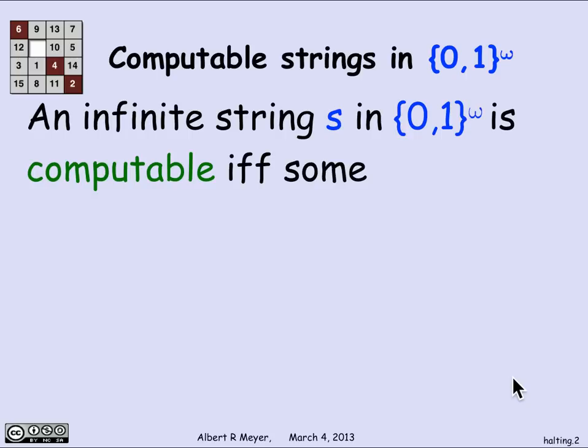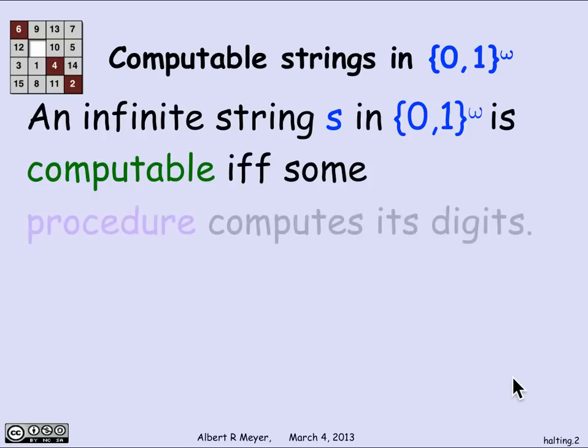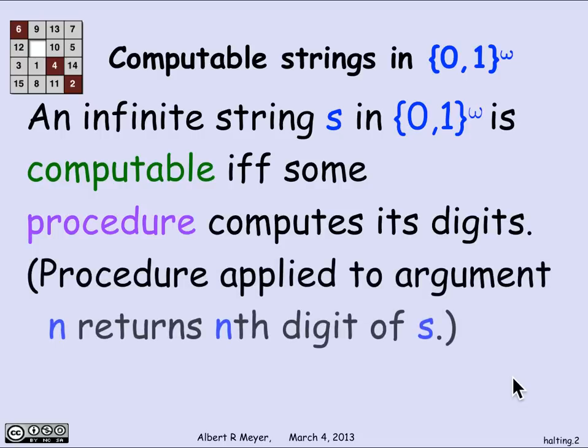Let's look at the strings in the infinite binary strings that we might call a computable string. What I mean by a computable string is that there's simply a procedure that will tell me what its digits are. The procedure applied to argument n will return the nth digit of the string s. That's the definition of s being computable — I can compute its digits, whichever digits are needed.